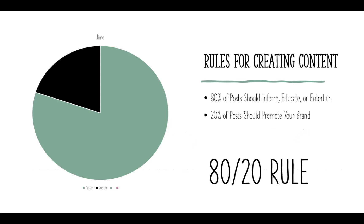When you are creating content, think about the 80/20 rule — 80% of your posts should inform, educate, and entertain your audience, while 20% should be about promoting your brand. Nothing will wear out an audience faster than a brand that's constantly just saying 'this is who we are, come visit us.' Think of Temu from the Super Bowl — it was the same commercial like five times. It didn't really entertain; it didn't educate. It was just there.